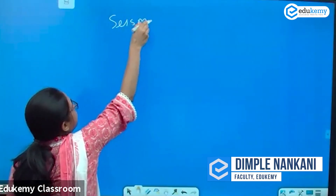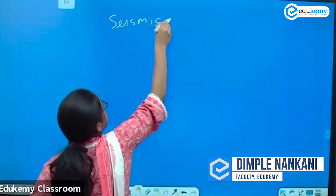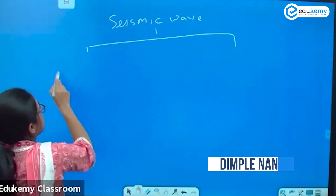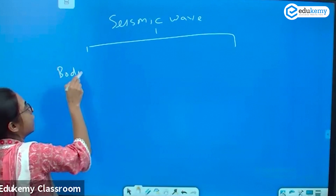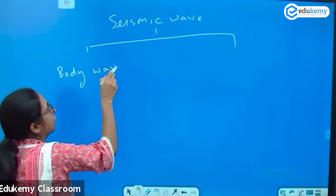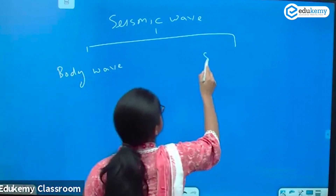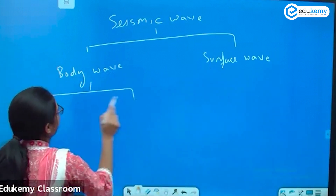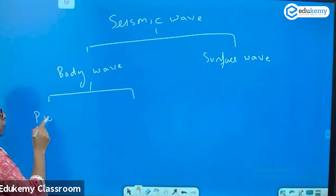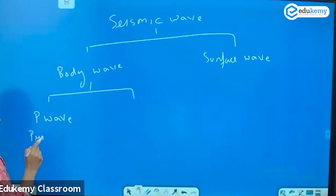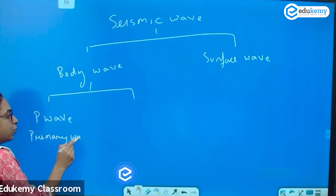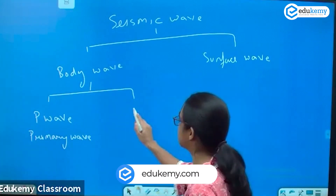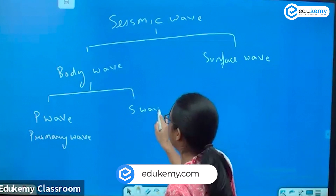The seismic waves are of two types: one is the body wave and the other is the surface wave. The body waves are of two types — one is the P wave, also called the primary wave, and the second is the S wave, which is the secondary wave.